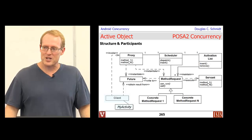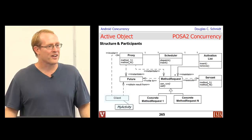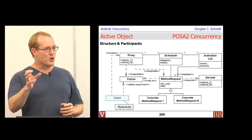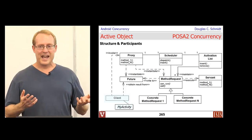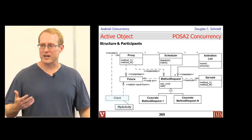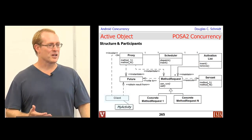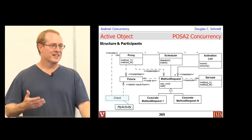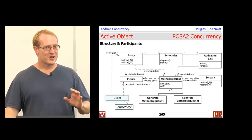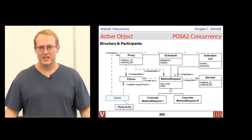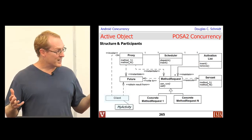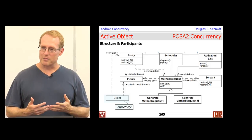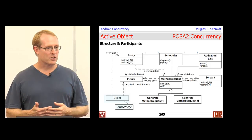Another form of optimization in these restaurants is having customers do some of the work — they give you a cup and you go fill it up yourself. So that's the active object pattern described through a fast food metaphor. We also talked about the various elements, and we'll discuss them again in a more technical way next.